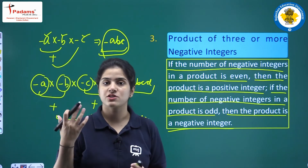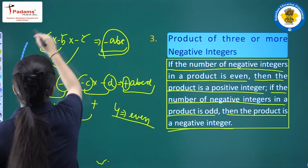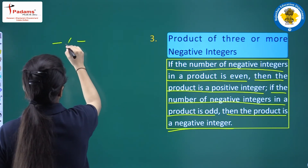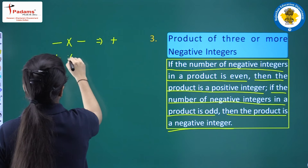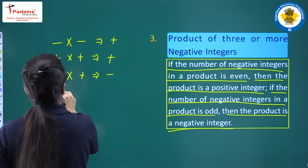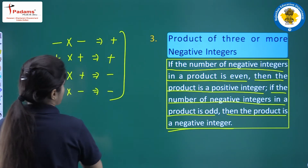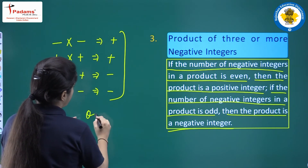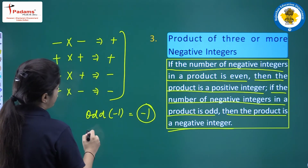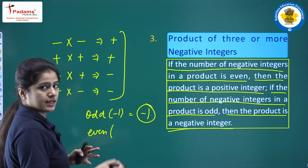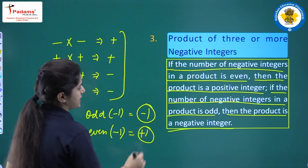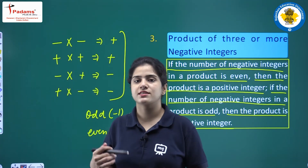This was all about the multiplication of integers. To summarize: minus times minus equals plus, plus times plus equals plus, minus times plus equals minus, and plus times minus equals minus. Also, multiplying an odd number of negative integers gives a negative result, while an even number gives a positive result.